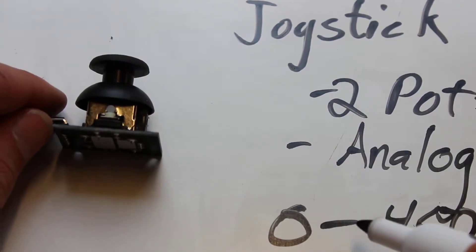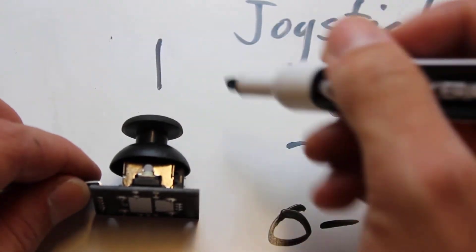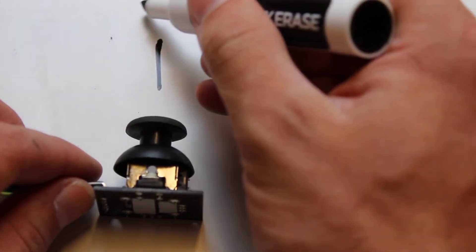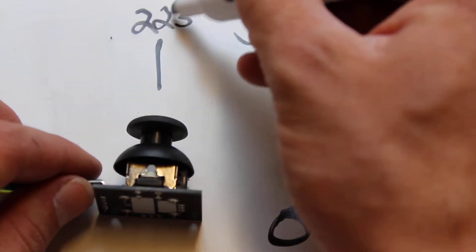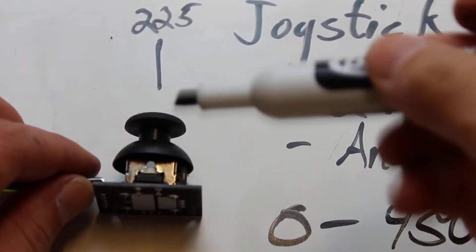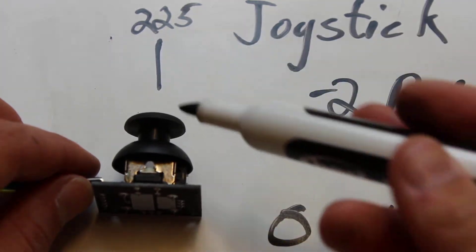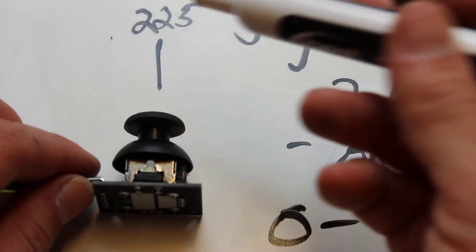So that means that here when it's sitting at 0, at its home position, you're basically sitting at 225 right there. So when it's vertical, it's 225. In your code, you're going to have to find a way to compensate for that.